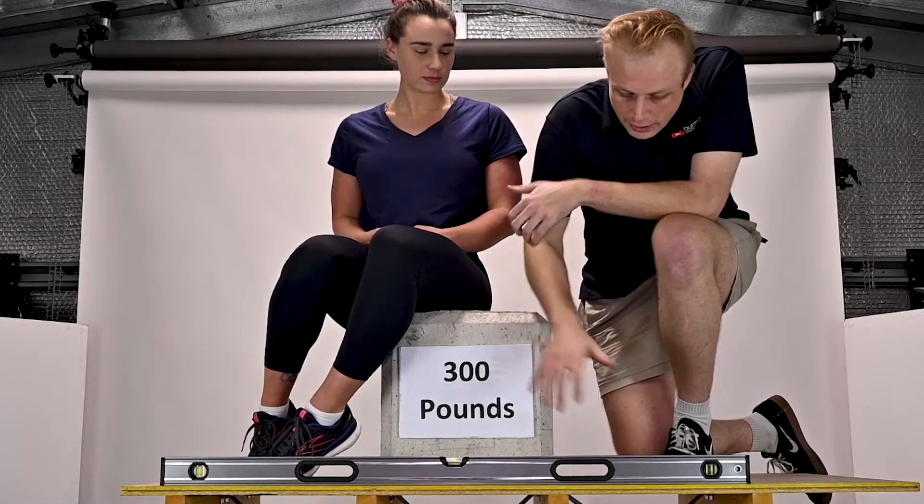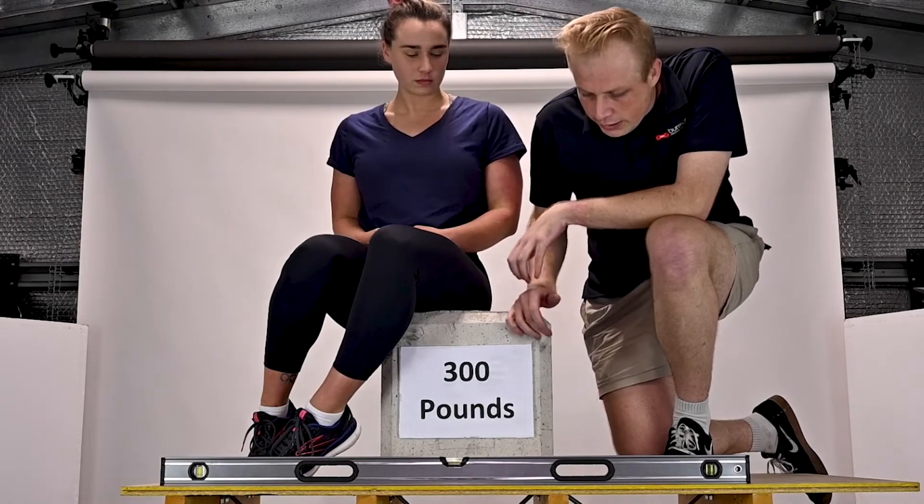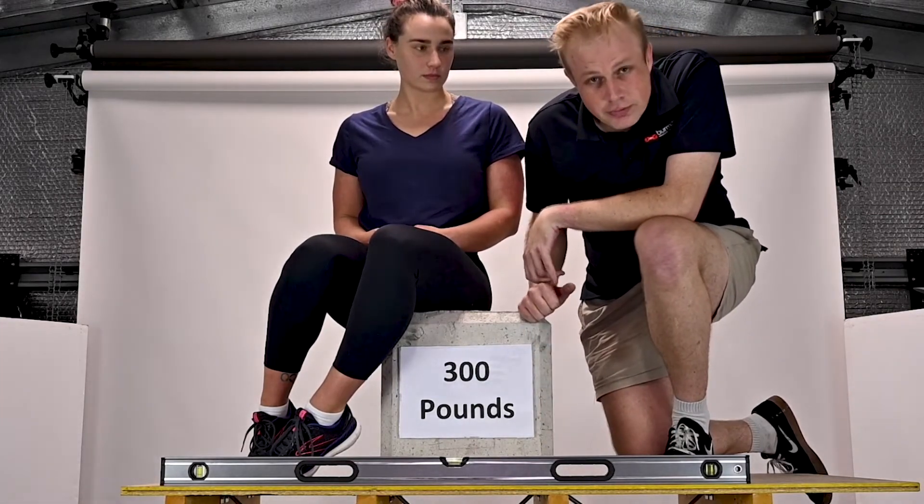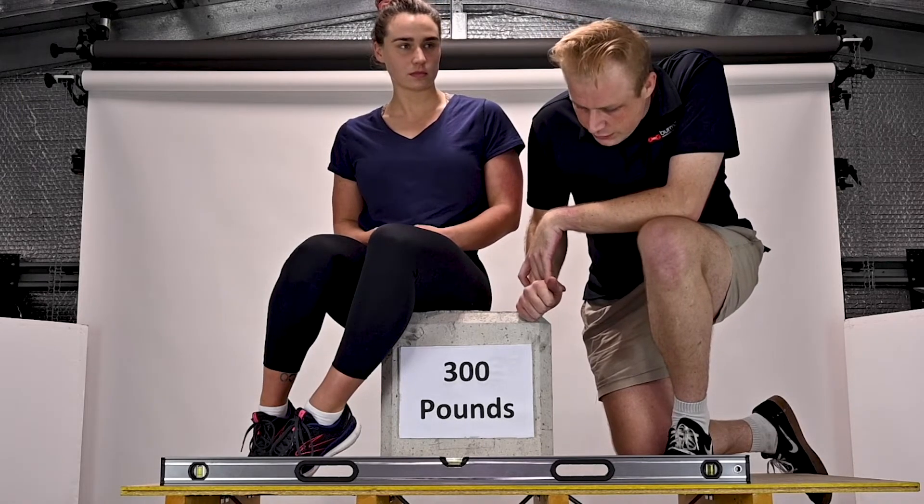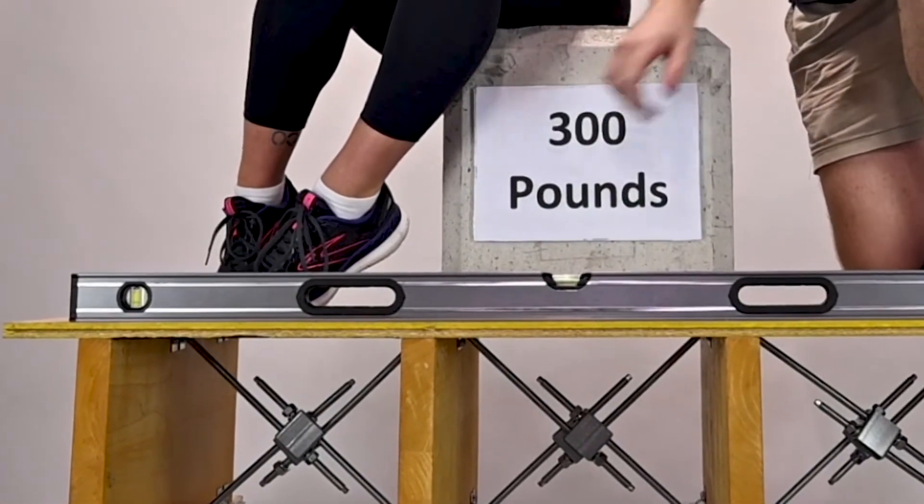Currently we have our AFB, our adjustable floor lock brace, installed. We had a deflection in our floor with just a concrete block alone of 18mm, so half an inch, and we brought that floor assembly level by installing one row of AFB.